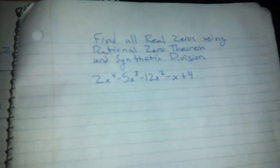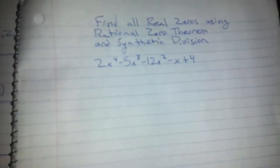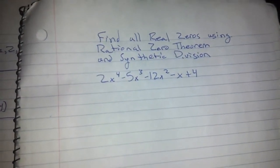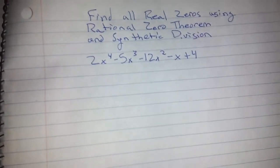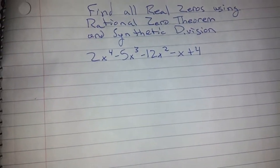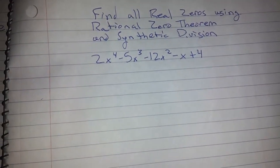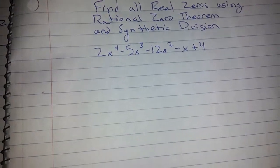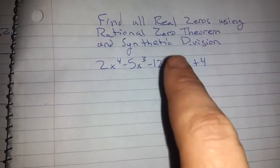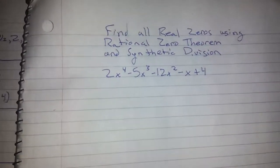Hey there, guys. Our assignment today is finding all real zeros using the rational zero theorem and synthetic division. Our polynomial is 2x^4 minus 5x^3 minus 12x^2 minus x plus 4.